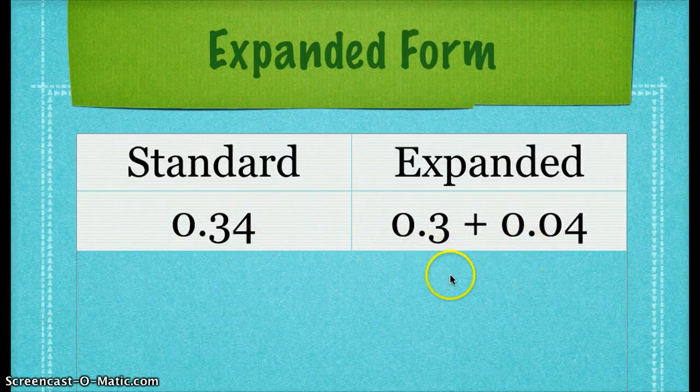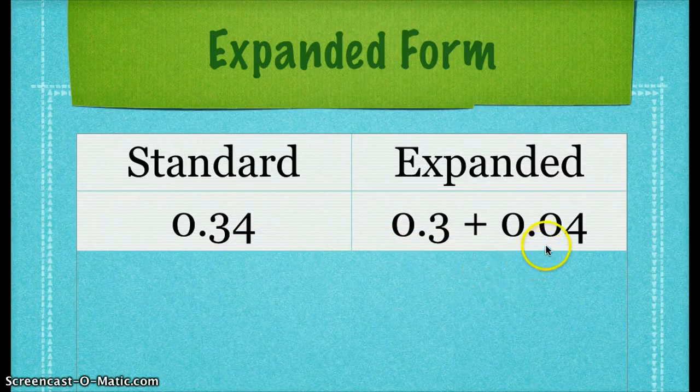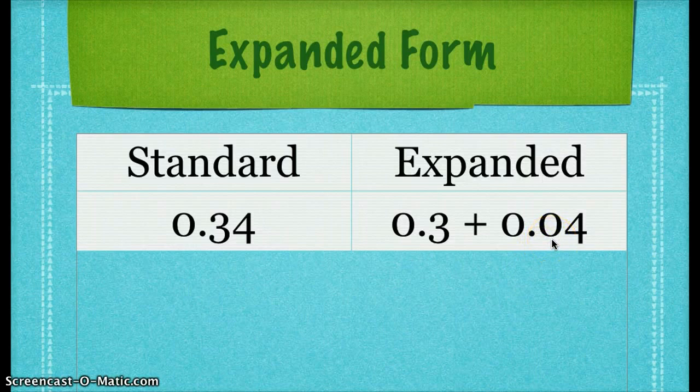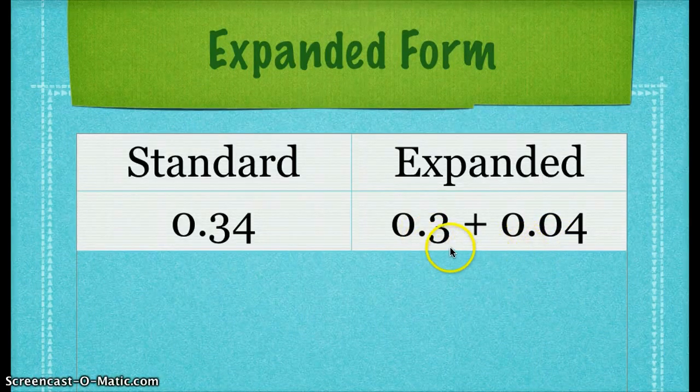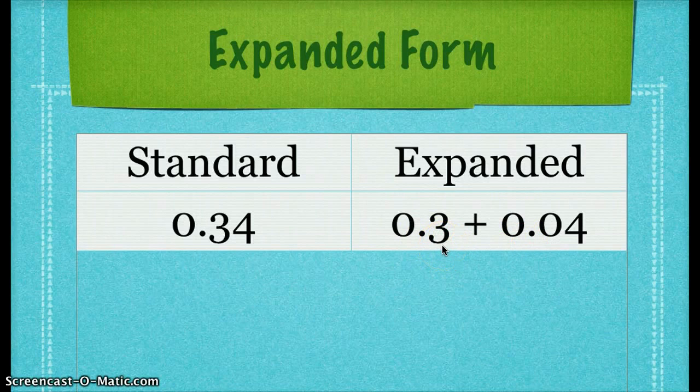In the expanded version of the decimal, they have the same place values, but I replace the 3 with a 0. Each term in the expanded form should only contain one non-zero number.